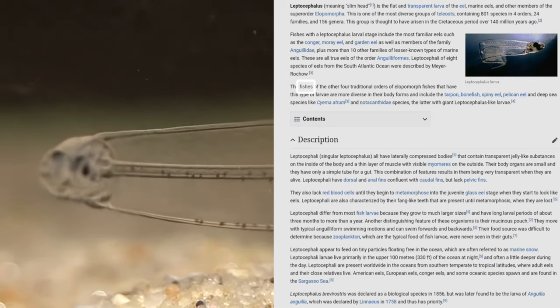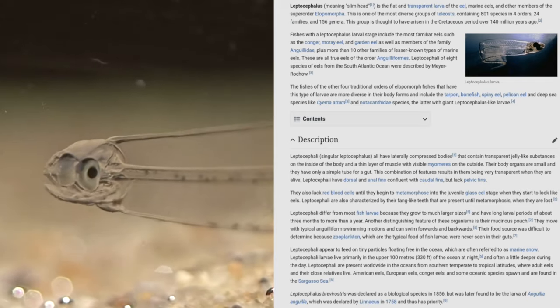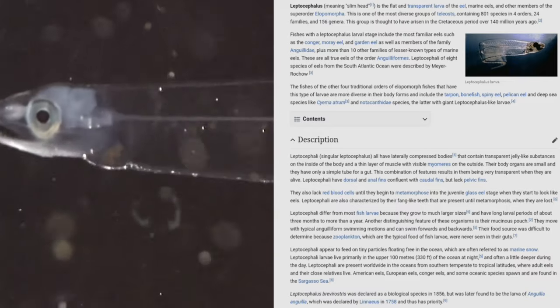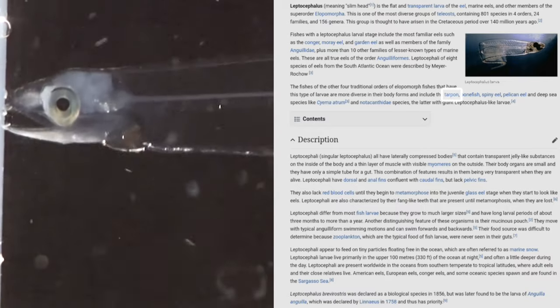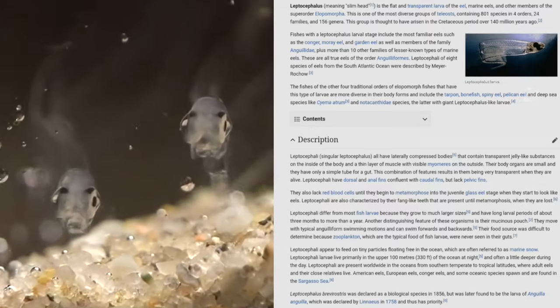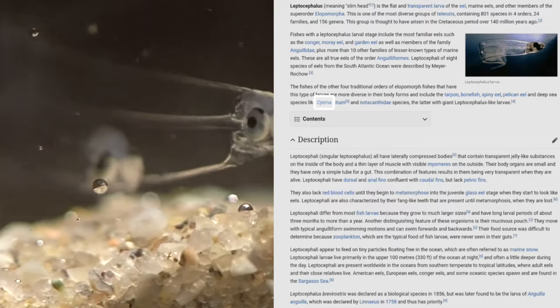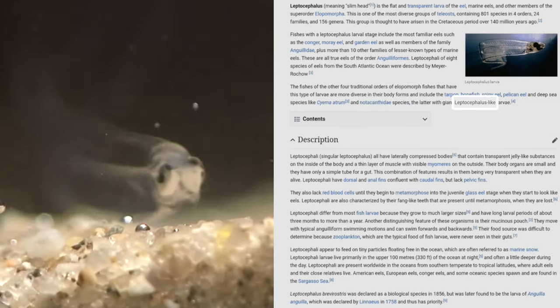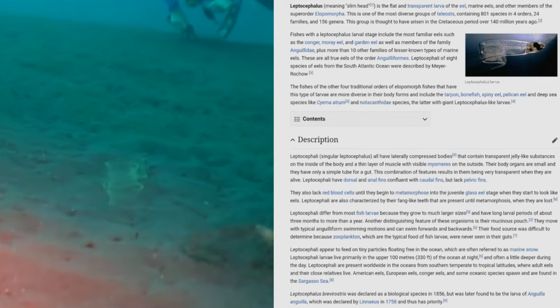The fishes of the other four traditional orders of elopomorph fishes that have this type of larvae are more diverse in their body forms and include the tarpon, bonefish, spiny eel, pelican eel, and deep-sea species like Cyema atrum and notacanthid species, the latter with giant leptocephalus-like larvae.